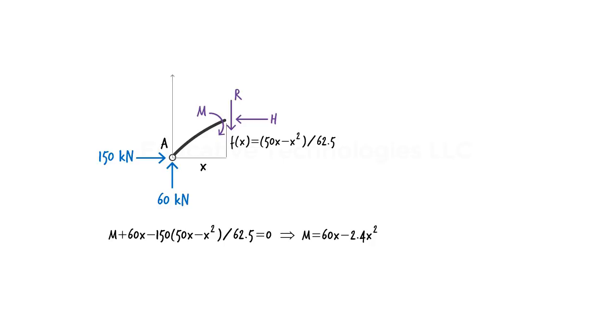Since sum of the forces in the x direction must be zero, h must be 150 kN, and r must be 60 kN in order for the sum of the forces in the y direction to be zero. But note that h and r do not represent axial and shear forces in the member.